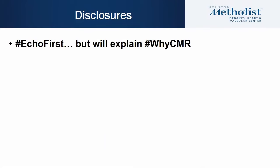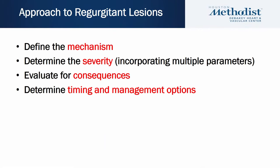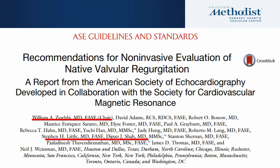I'll be talking about echo but will also explain when you should use MRI for evaluation of these important regurgitant lesions. The approach to regurgitant lesions includes first defining the mechanism, then determining the severity, incorporating multiple parameters, followed by evaluation of consequences of these lesions, and finally determining the timing and management options. My talk will be based on the ASE guidelines for non-invasive evaluation of native valvular regurgitation.